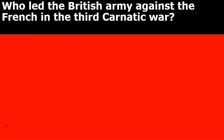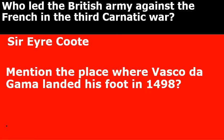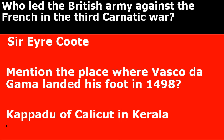Who led the British Army against the French in the Third Carnatic War? Sir Eyre Coote. Mention the place where Vasco da Gama landed in 1498. It is Kappadu of Calicut in Kerala.